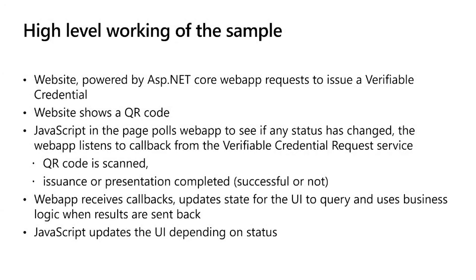At a high level, it's a .NET Core web app which sends requests to our API to issue and verify credentials. The website will show a QR code pointing to a URL returned by the API. We have JavaScript in the web page which polls the web app to see if there's any change it needs to show in the UI — that's how we update it when the QR code is scanned, and when issuance or verification is completed. The web app, meanwhile, receives callbacks from our service when the wallet has reached the request through the QR code. So the JavaScript is just a polling mechanism to make sure when a state changes, the UI is changed as well.